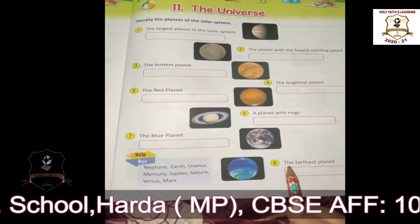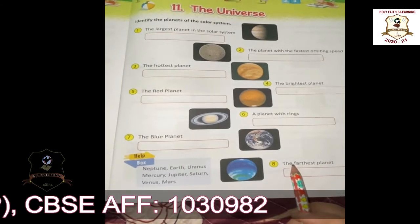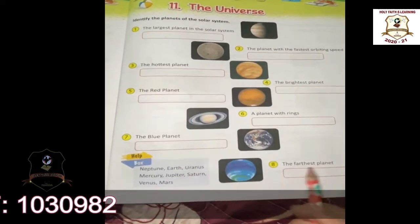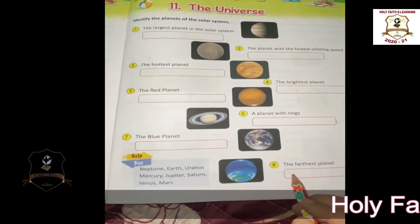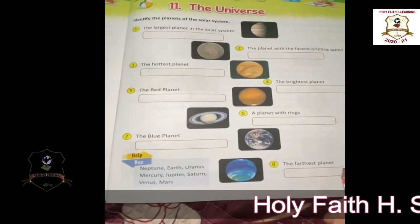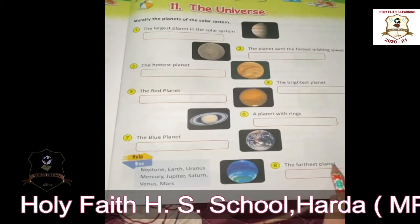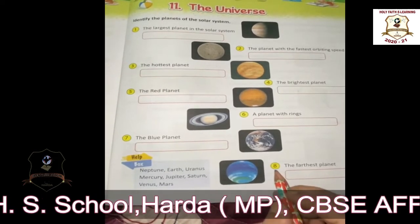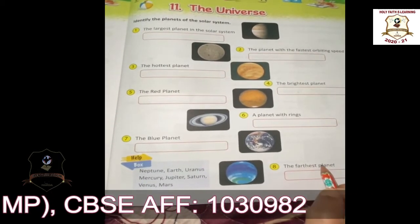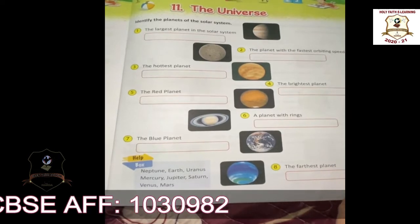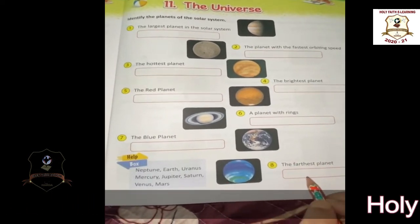The last one: the farthest planet. Which is the planet that is very far? The answer is Neptune, because Neptune is the last planet. So the farthest planet is Neptune — that is, Neptune is the planet that is far away from the sun.